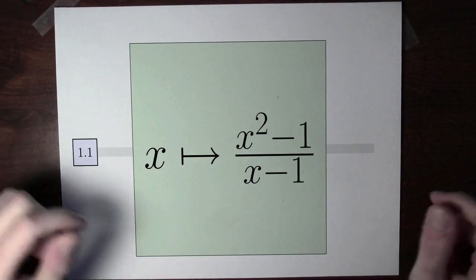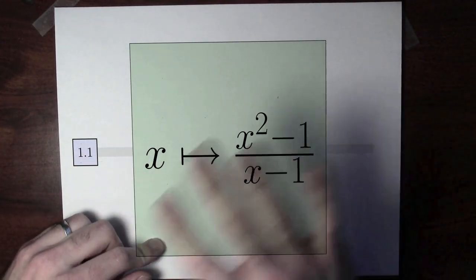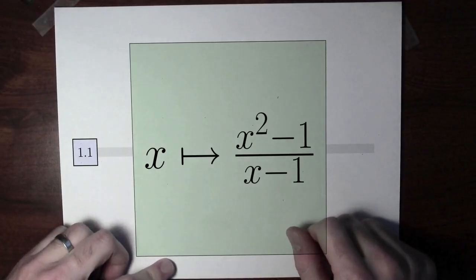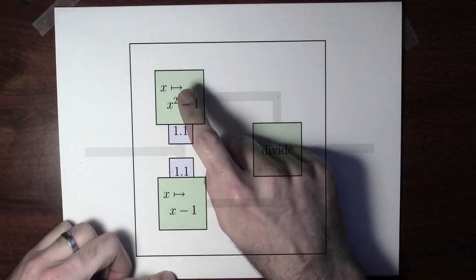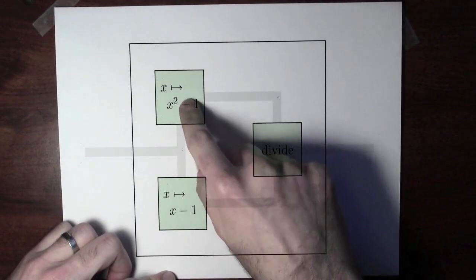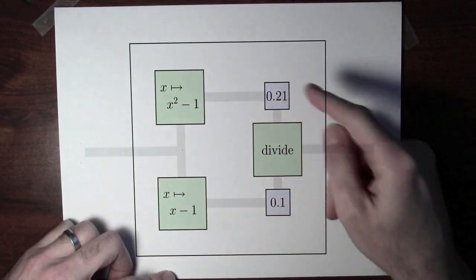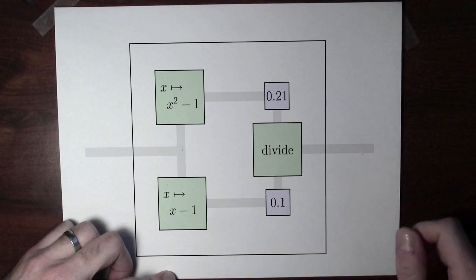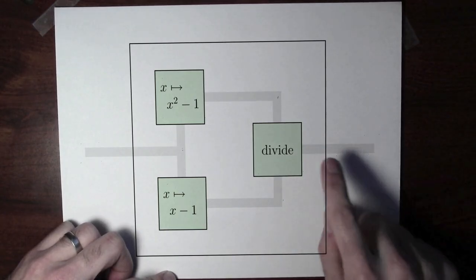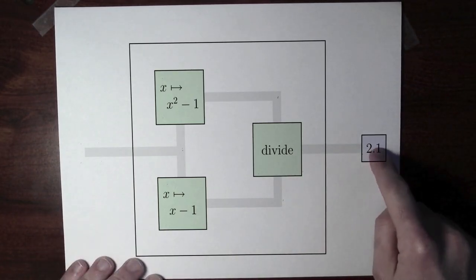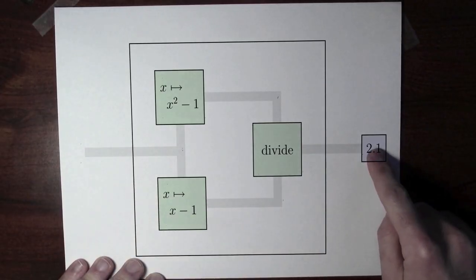I can't plug 1 into the function, but if I wanted to figure out what the function's value was at inputs near 1, I could do that. Let's try to plug in 1.1 instead. I can't plug in 1 because I'd be dividing by 0, but let's try plugging in 1.1. Opening up the function: 1.1 squared minus 1 is 0.21, and 1.1 minus 1 became 0.1. Now 0.21 and 0.1 are going into the division, and 0.21 divided by 0.1 is 2.1. So when I evaluate the function at 1.1, I get out 2.1.